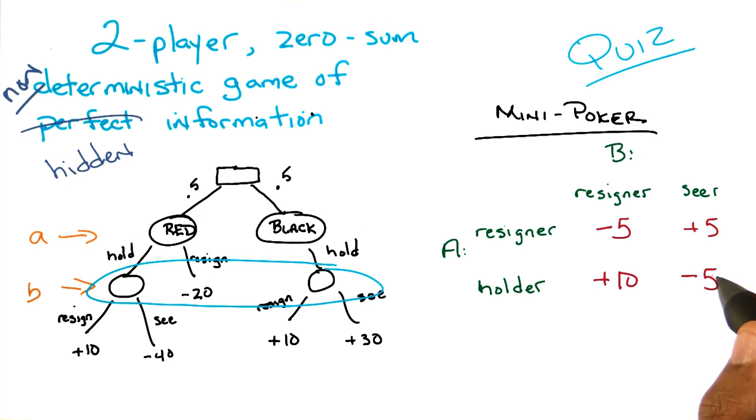Right. So from this, so it seems like the value of the game is minus 5. But now let's do the same thing on the B column. So if B resigns, now A gets to choose resigner or holder, and it gets a plus 10. And if B is a seer, then A chooses between resigner and holder and gets plus 5. Yes. So then from this perspective, the value of the game is plus 5.